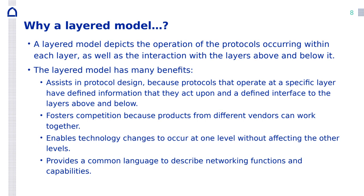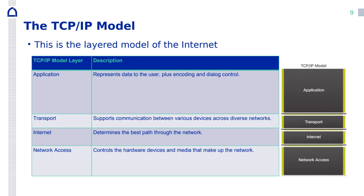Why is it better to have these layers? It's easier to learn about network standards when given layers. It also assists in protocol design, enables industry changes without affecting other levels, and provides a common language to describe networking functions. You can buy a network interface card from any manufacturer and it will still work because they follow the same standard. The TCP/IP model has four layers: application — for example HTTP — transport, with TCP and UDP, internet with IP, and network access, which controls hardware devices and media like Ethernet.